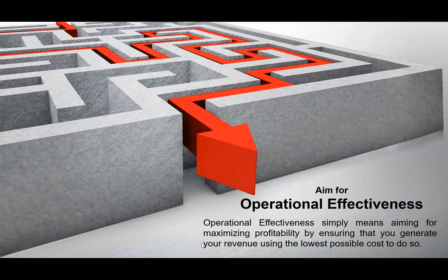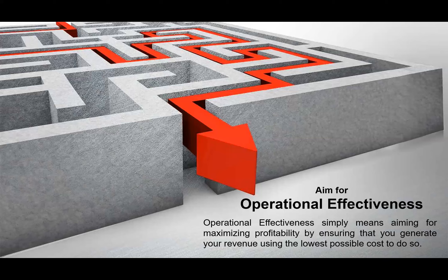First of all, aim for operational effectiveness. Operational effectiveness basically means maximizing profitability by ensuring that you generate your revenue using the lowest possible cost. We need to maximize the revenue with the lowest possible cost. Without cost optimization and revenue optimization, we need to spread the profitability and create operational effectiveness, reducing cost while growing revenue.